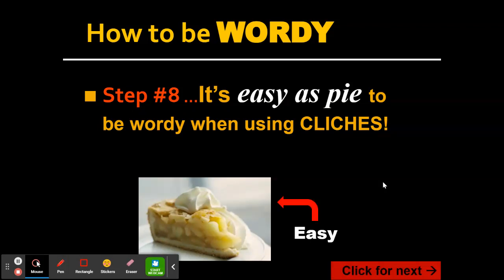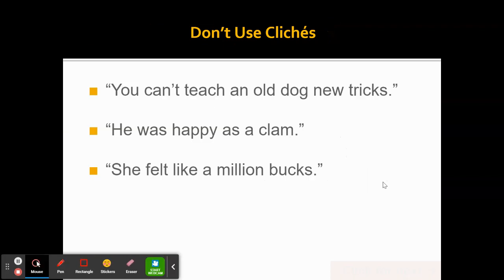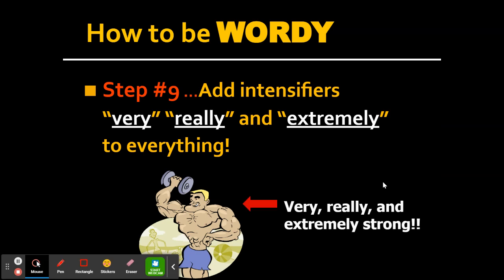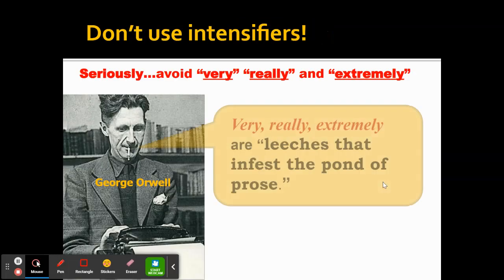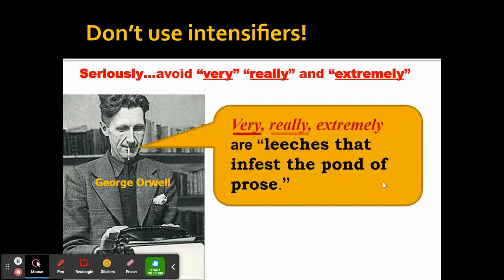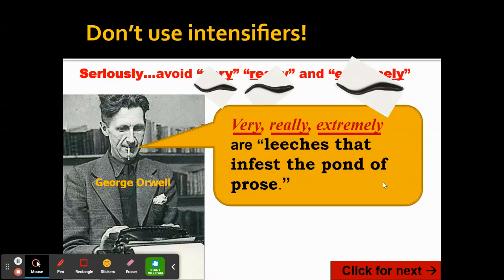Avoid clichés like 'easy as pie,' 'one in a million,' 'dug its own grave,' 'felt like a million bucks,' 'happy as a clam,' and 'you can't teach an old dog new tricks.' Also avoid intensifiers like 'very,' 'really,' and 'extremely' — these can usually be replaced with a much better word. George Orwell said that intensifiers like 'very,' 'really,' and 'extremely' are leeches that infest the pond of prose.